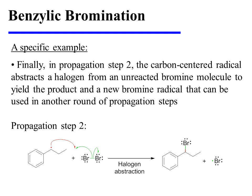Finally, in propagation step two, the carbon-centered radical abstracts a halogen from an unreacted molecule of bromine. This yields not only the product, but also a new bromine radical that can be used in another round of propagation steps.